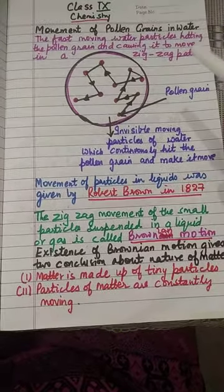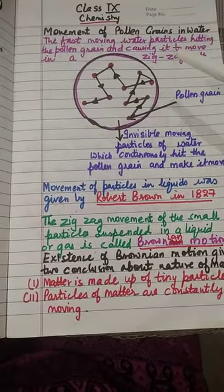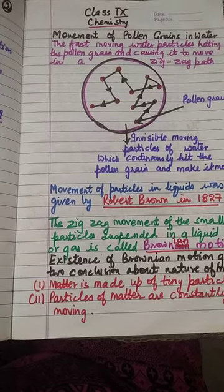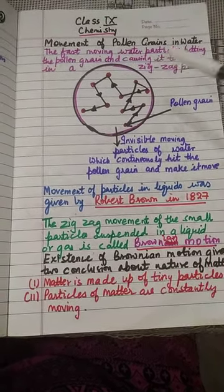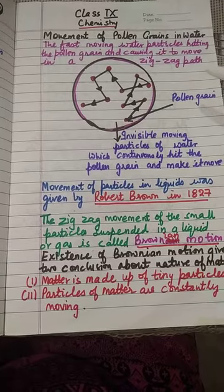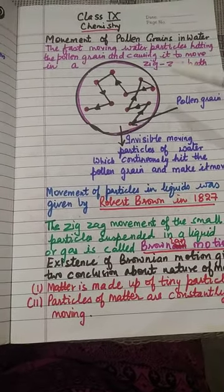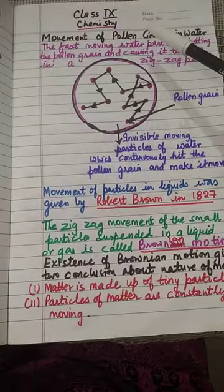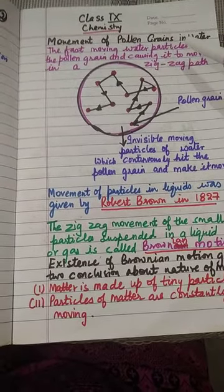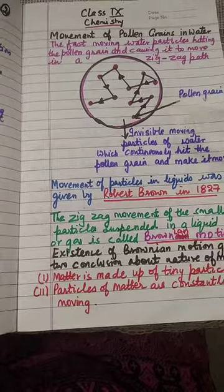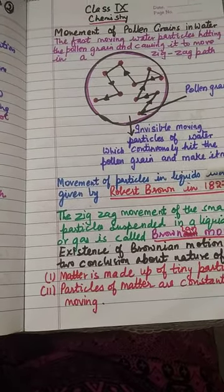Hello students. Today's topic is movement of pollen grains in water. As we know, matter is made up of particles. The best evidence for the existence of movement of particles in liquid was given by Robert Brown in 1827.